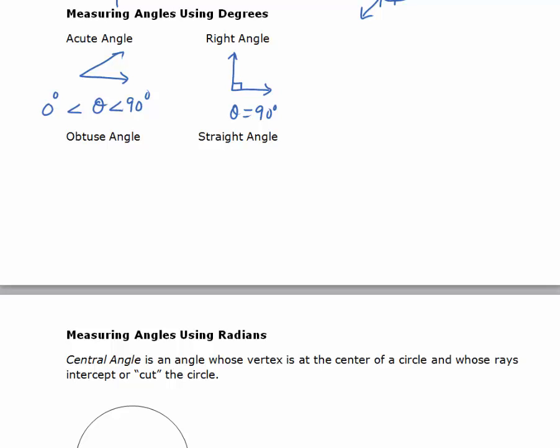An obtuse angle is an angle that is between 90 degrees and 180 degrees, and then a straight angle would be equal to 180 degrees.